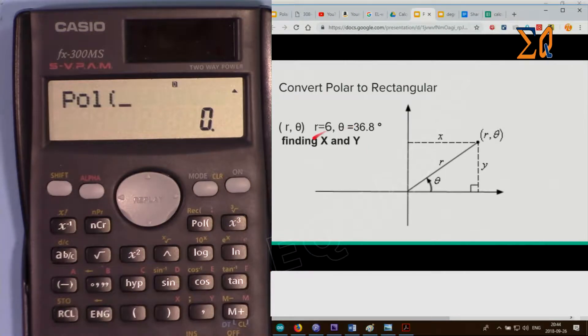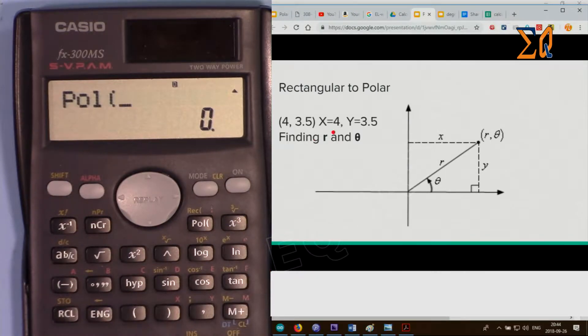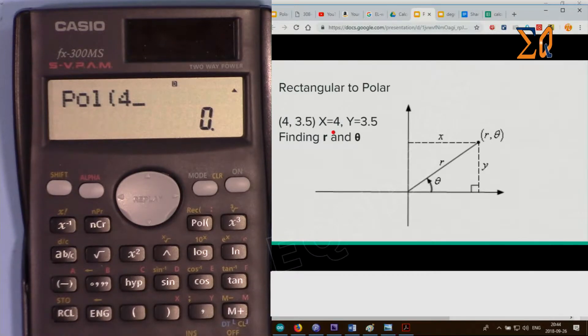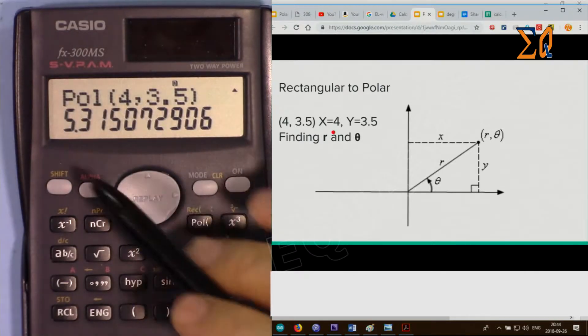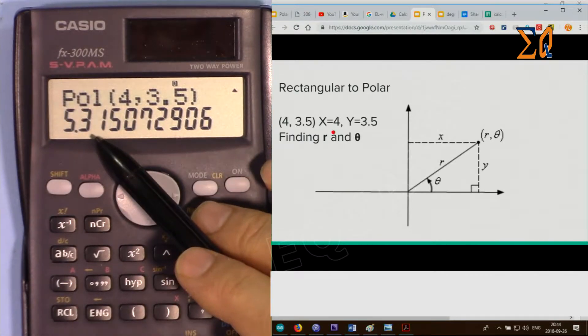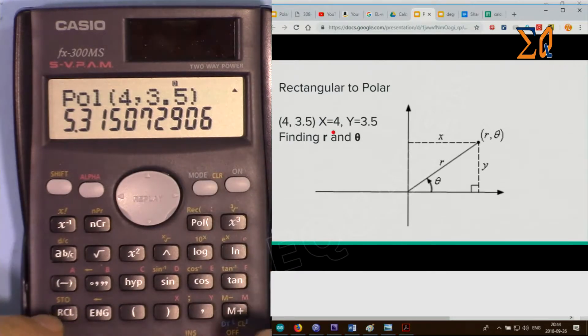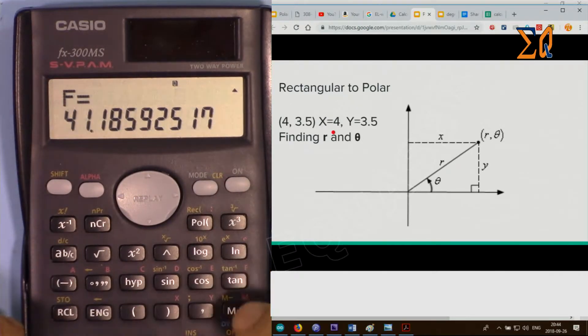Enter 4 comma 3.5, close, and press equal sign. So it shows 5.3, that's the magnitude. To get the angle, press recall and then F or tan. Press recall F and that's 41.18 degrees.